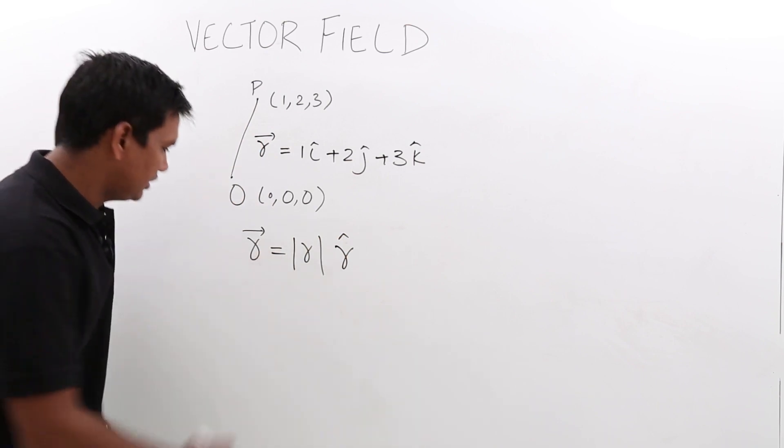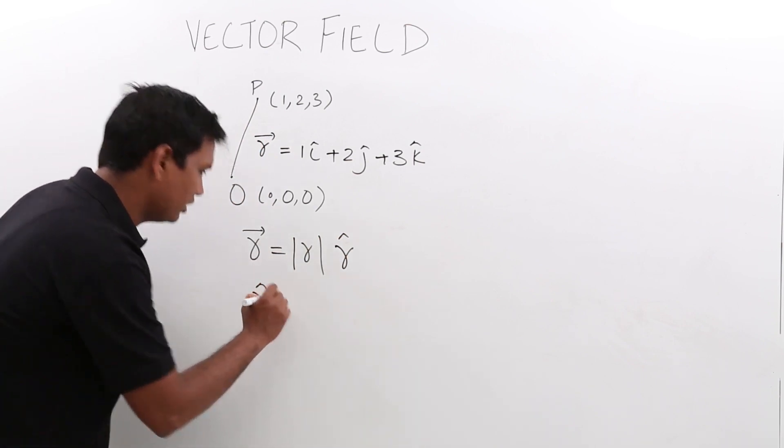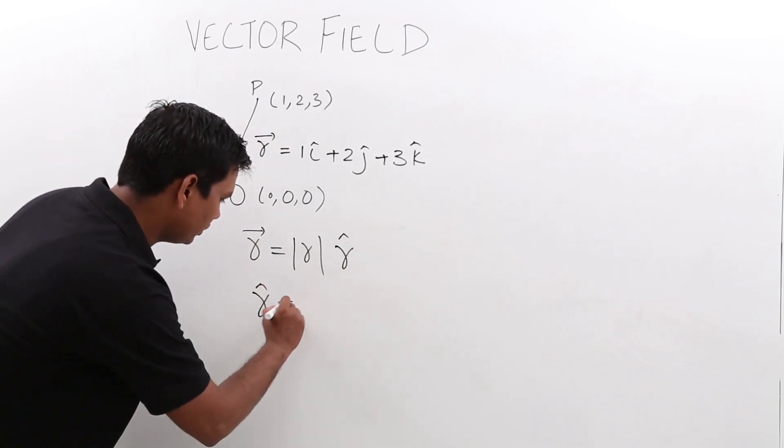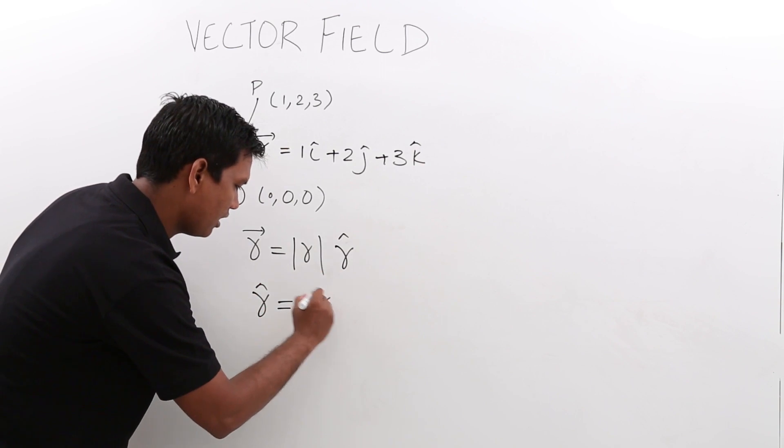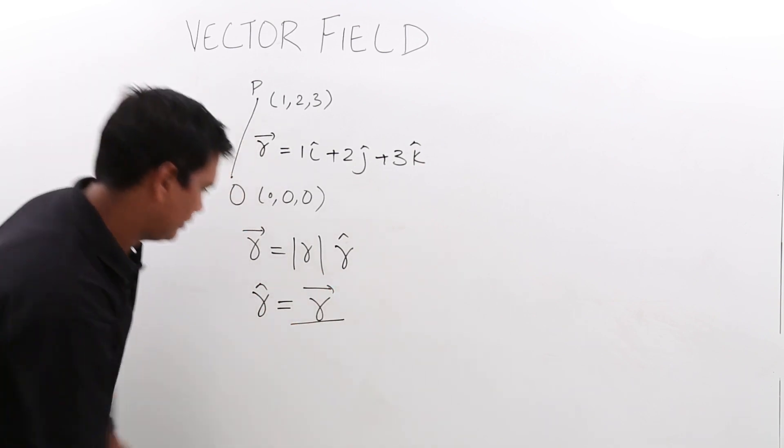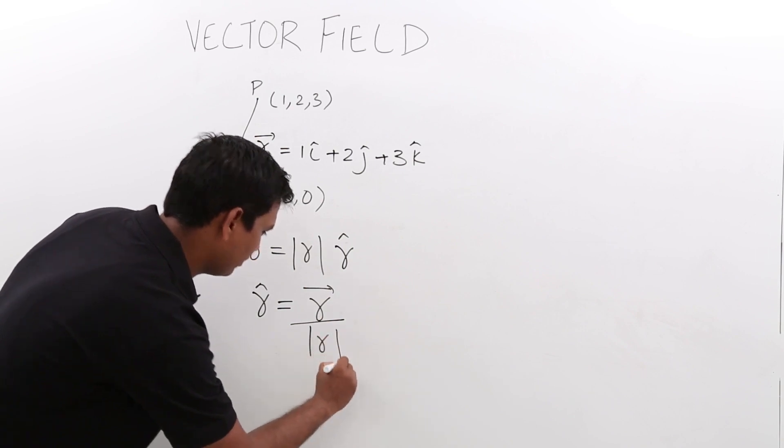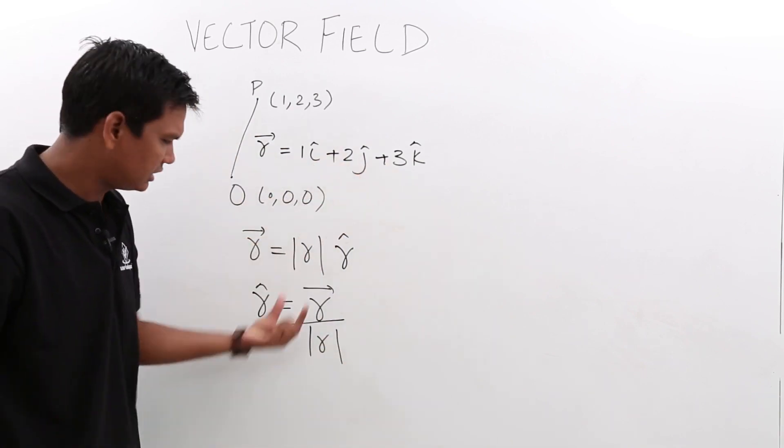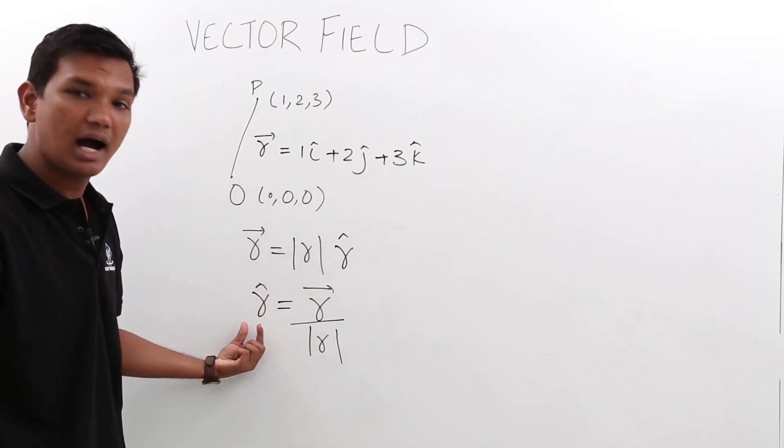If I rephrase this, r cap, called the unit vector, is equal to the r vector divided by the magnitude of r. Let's understand this in this example - what would be my r cap?